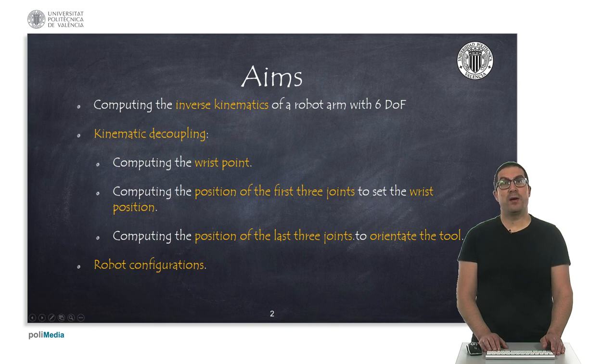The steps to follow are: on the one hand to compute the wrist point, then to compute the angles of the first three joints, and then the last three joint angles to obtain the orientation of the tool. We will also talk about different configurations that the robot can adopt, all of them obtaining the same solution, which means that all of them reach the same target.